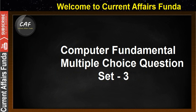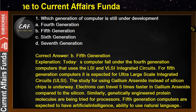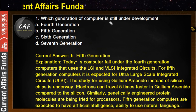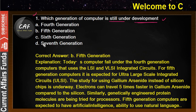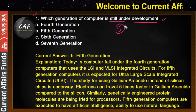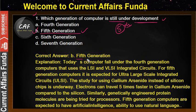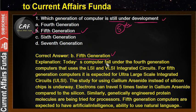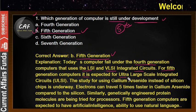The first question: which generation of computer is still under development? Options are fourth, fifth, sixth, and seventh. There are only five generations, so the answer is B — fifth generation. Fifth generation computers are under development. Today's computers fall under the fourth generation, which uses LSI and VLSI integrated circuits.